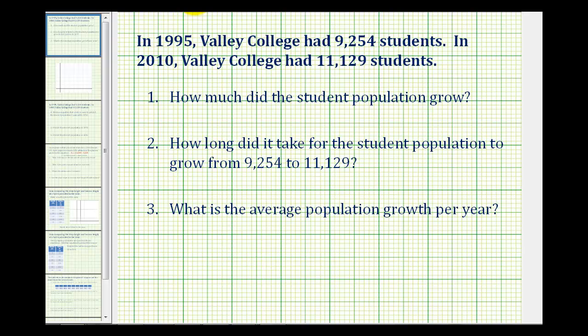To determine the amount of growth in student population, we need to find the difference between the ending population and the beginning population. So we'd have 11,129 minus 9,254. This comes out to 1,875. So this is the growth in the number of students from 1995 to the year 2010.